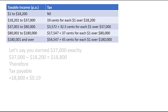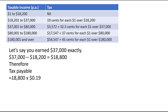Next, multiply that $18,800 by 19 cents. Don't just multiply by 19, because you'll get a very big number and be very wrong. You have to multiply by 19 cents as a dollar amount, which is 0.19. In effect, we're finding 19% of $18,800. That comes out to $3,572 tax payable, which would normally be taken out by your employer during the year.